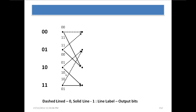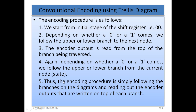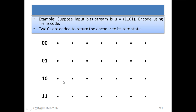This form of diagram is called a trellis diagram and it actually helps in encoding the convolutional code. The encoding procedure using trellis diagram is as follows: we start from the initial state of the shift register, that is 00. Depending on whether a 0 or 1 comes, we follow the upper or lower branch to the next node. The encoder output is read from the top of the branch being traversed. Thus the encoding procedure is simply following the branches on the diagram and reading out the encoder outputs written on top of each branch.